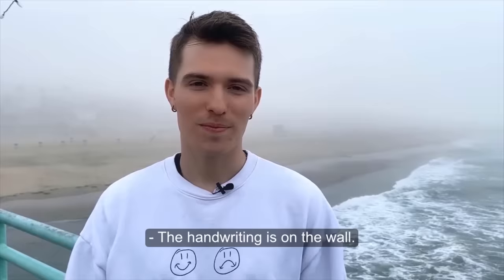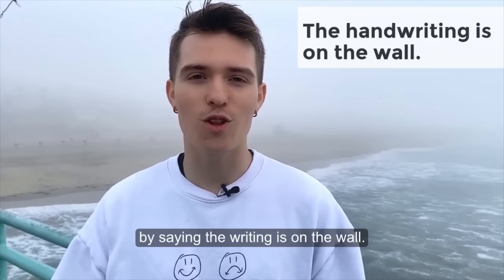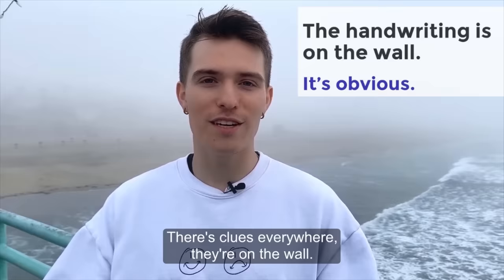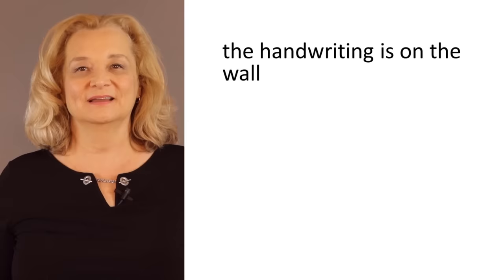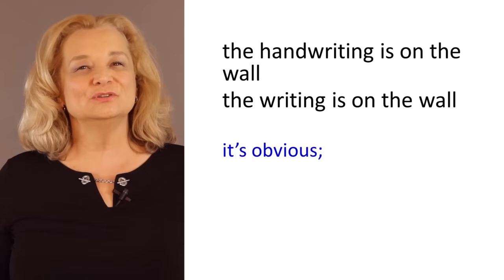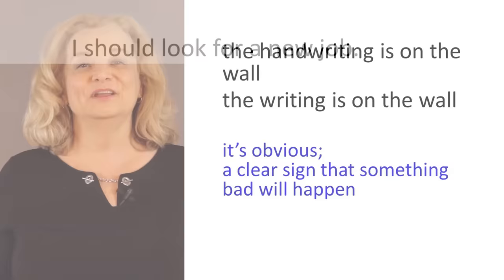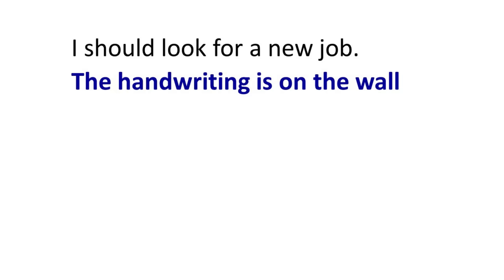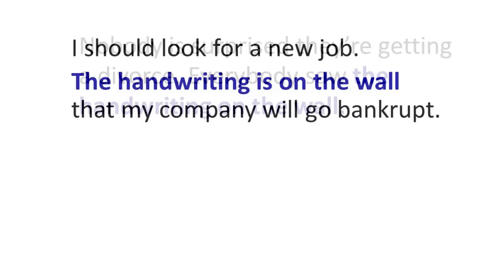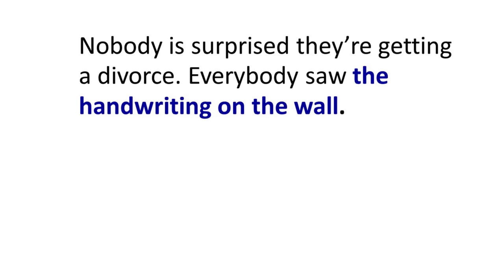The handwriting is on the wall. I've also heard people shorten it by saying the writing is on the wall. It's a way to say that it's obvious — don't you see the clues? They're everywhere, they're on the wall. This is usually used to mean there's a clear sign that something bad will happen in the future. You can say: I should look for a new job — the handwriting is on the wall that my company will go bankrupt. Or: nobody is surprised that they're getting a divorce, everybody saw the handwriting on the wall.